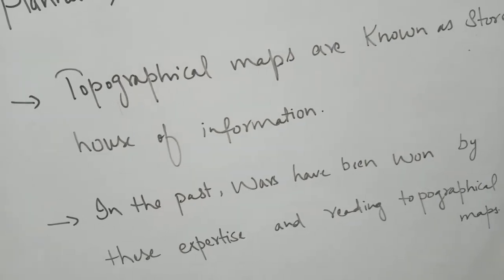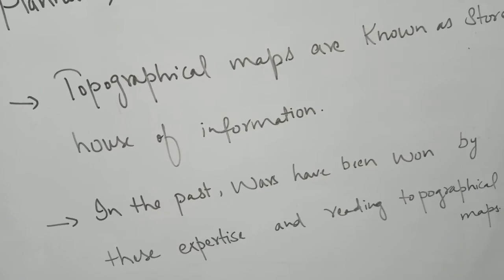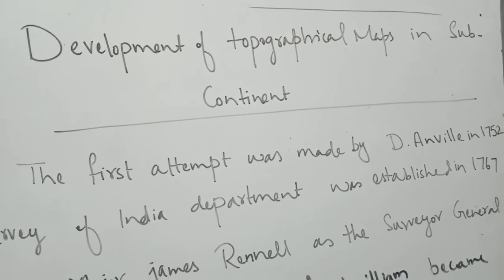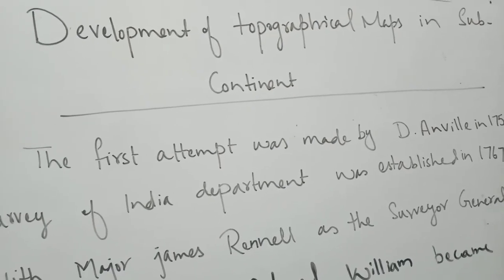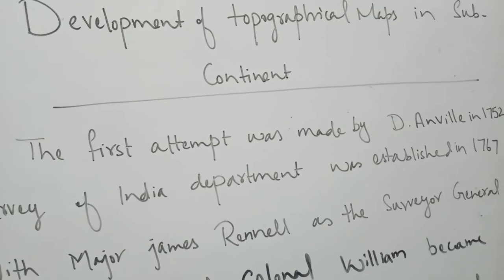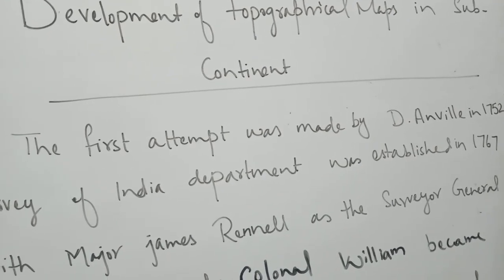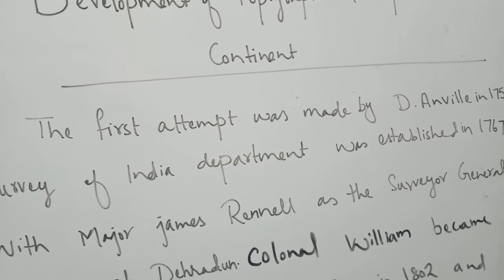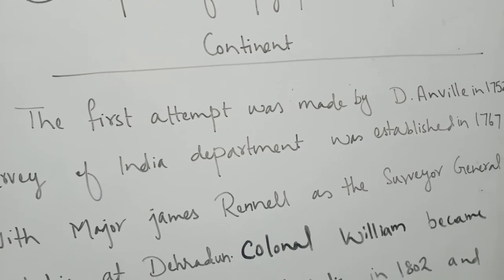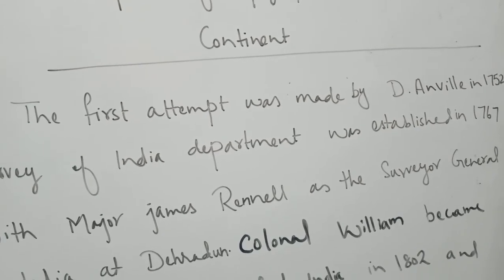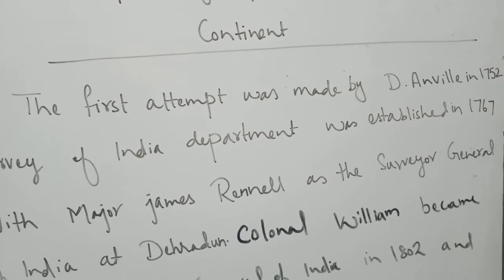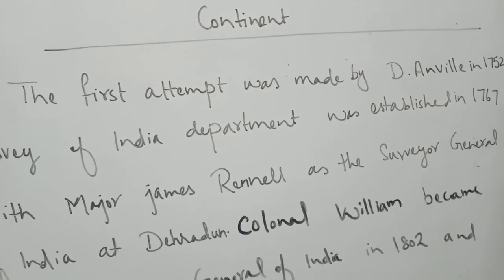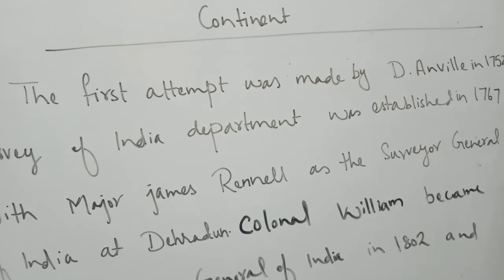Now let's quickly take a look at topographical maps in the subcontinent with some history. The development of topographical maps in the subcontinent: the first time these maps were made and used in the subcontinent was by Dr. Anvile in 1752. At that time, there was a need to establish a department of survey in India, so the establishment of the Department of Survey in India took place in 1767, with the major surveyor general selected at that time being Major James, with its headquarters at Dehradun.